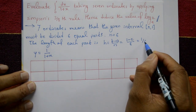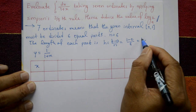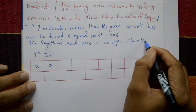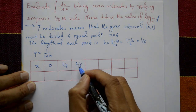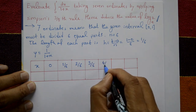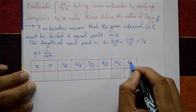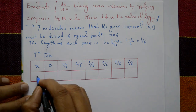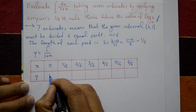With h = 1/6 and x ranging from 0 to 1, the x values with step size 1/6 are: 0, 1/6, 2/6, 3/6, 4/6, 5/6, and 6/6 which equals 1. This gives us 7 x values covering the interval from 0 to 1.